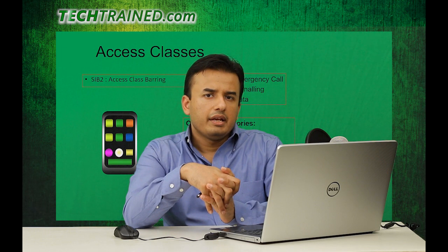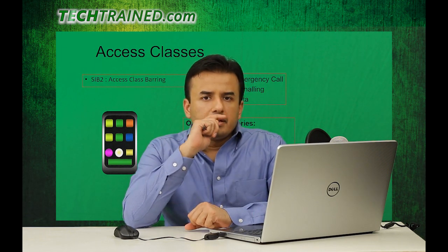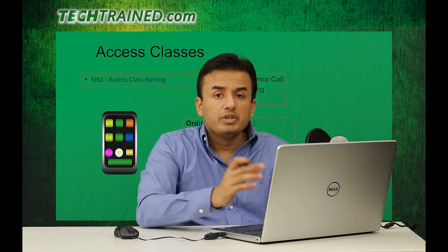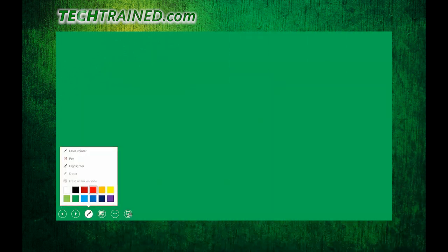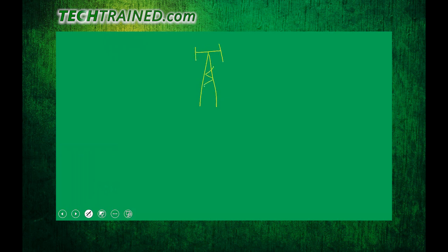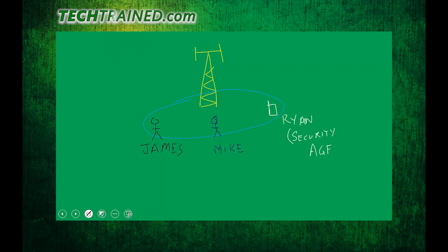To answer how access classes give priority to one user over another, we need to understand that in idle mode you are camping on a cell. Let's draw a scenario with three users camping on a site. Let's say one user is James, another is Mike with their smartphone, and the third user is Ryan.